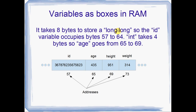It takes 8 bytes to store a long long. So id, which we said was 8 bytes long, starts at address 57 and goes all the way through to byte number 64. The age variable might be an integer, so that's going to take up 4 bytes, going from byte address 65 all the way through to byte address 68, just before height. Height is 4 bytes long as well, and weight is 4 bytes long as well.